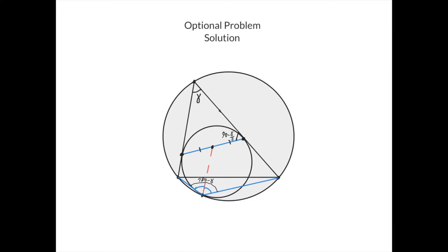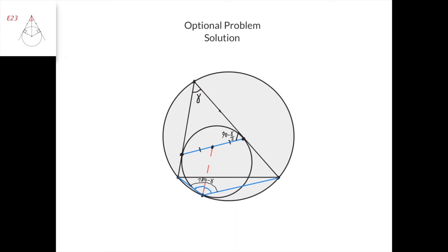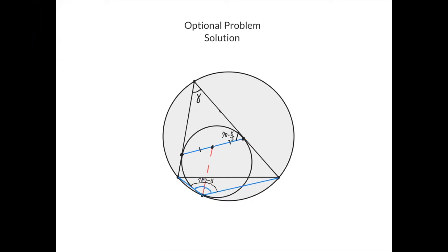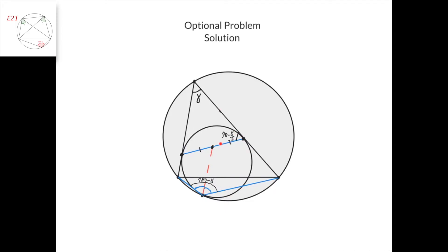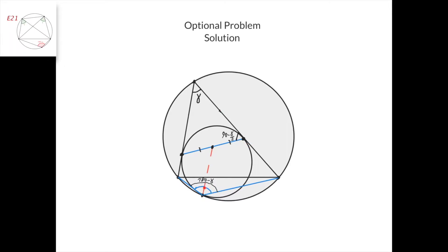Let this angle here be gamma. We know that this length equals this length because these are tangent lines to this circle from this point, so this is an isosceles triangle, and since this angle is gamma, this angle equals this angle equals 90 minus gamma over 2. From this cyclic quadrilateral we get that this angle plus this angle is 180 degrees, so this angle must be 180 minus gamma. We need to prove that this line is the angle bisector of this angle, so essentially we need to prove that this angle is 90 minus gamma over 2, which reduces to proving that this quadrilateral here is cyclic — because if it is cyclic, this angle plus this angle is 180 degrees, giving 90 plus gamma over 2, so this one must be 90 minus gamma over 2 as desired.